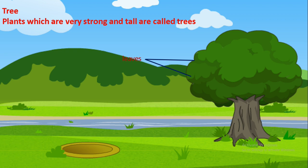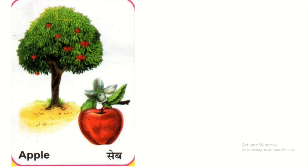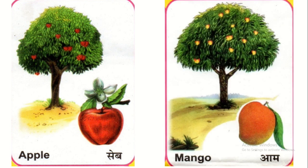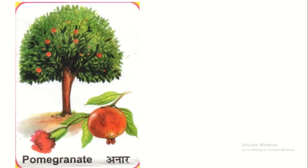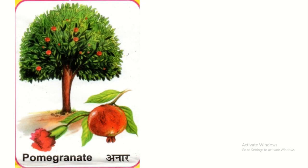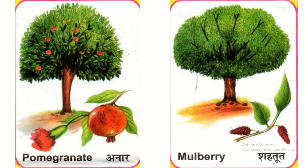Trees have leaves. Trees have a large and woody stem that cannot be cut easily. There are some examples such as apple tree, mango tree, pomegranate tree, mulberry tree, etc.